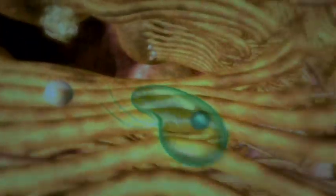These are choanocytes, cells whose whip-like flagella power the pump.